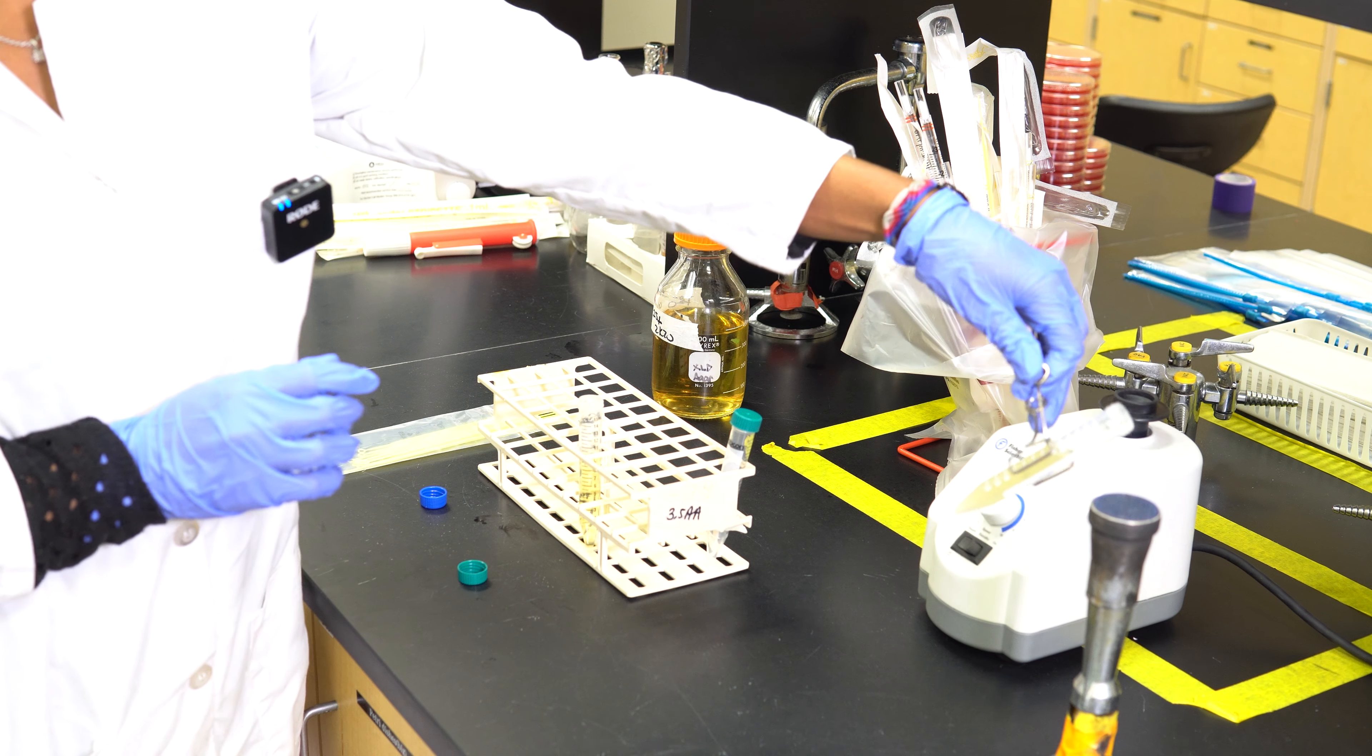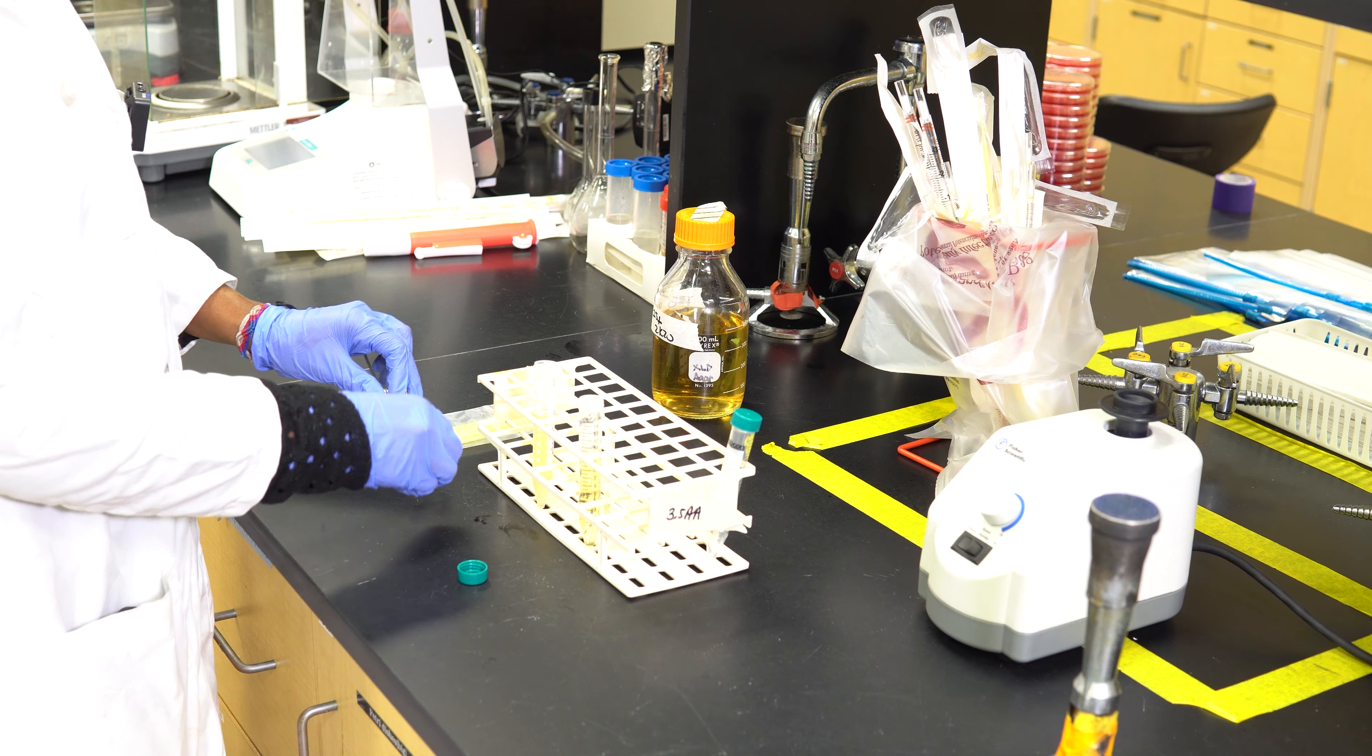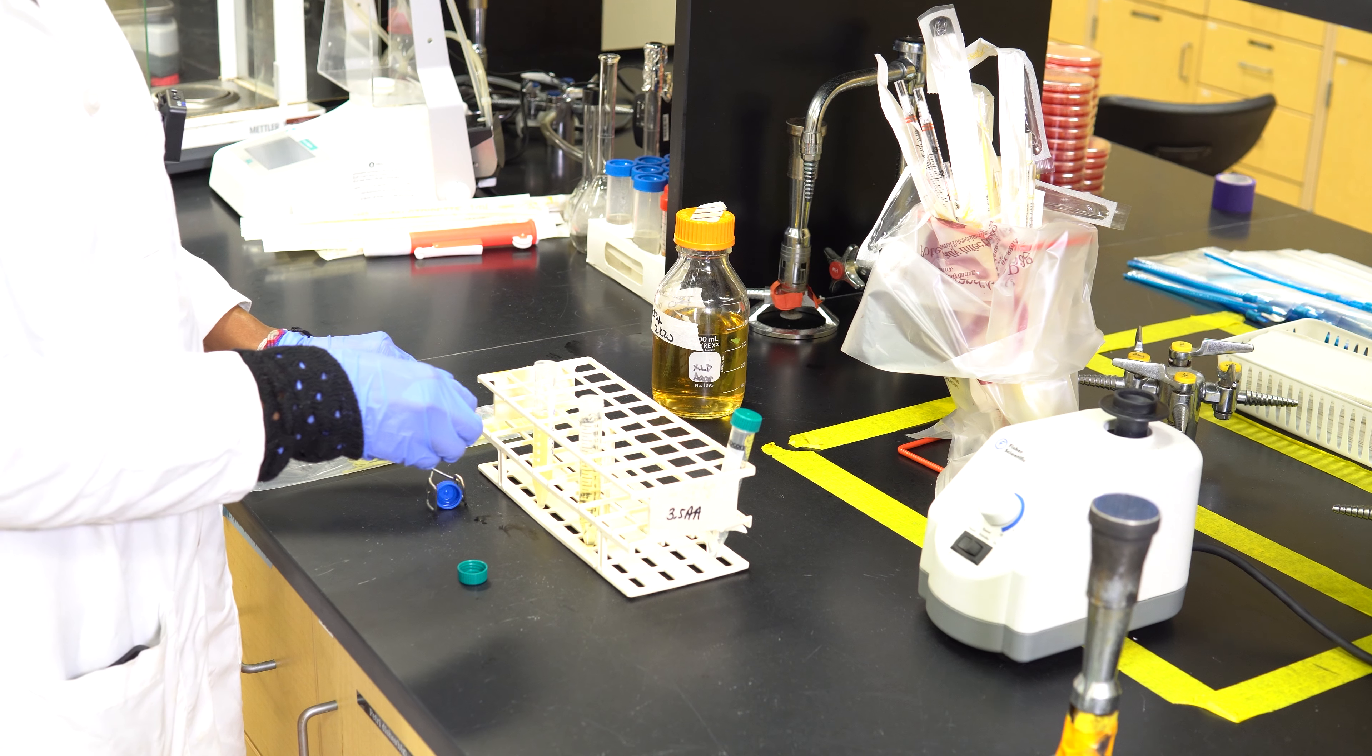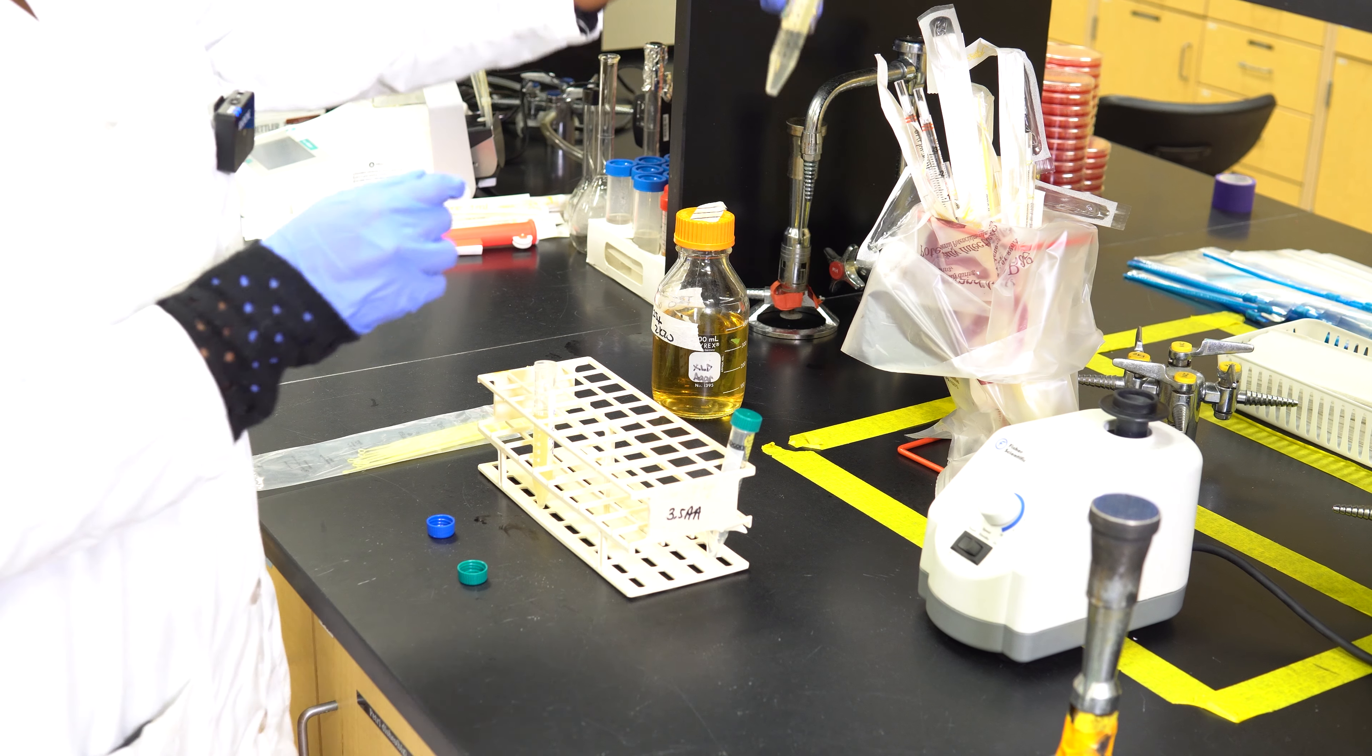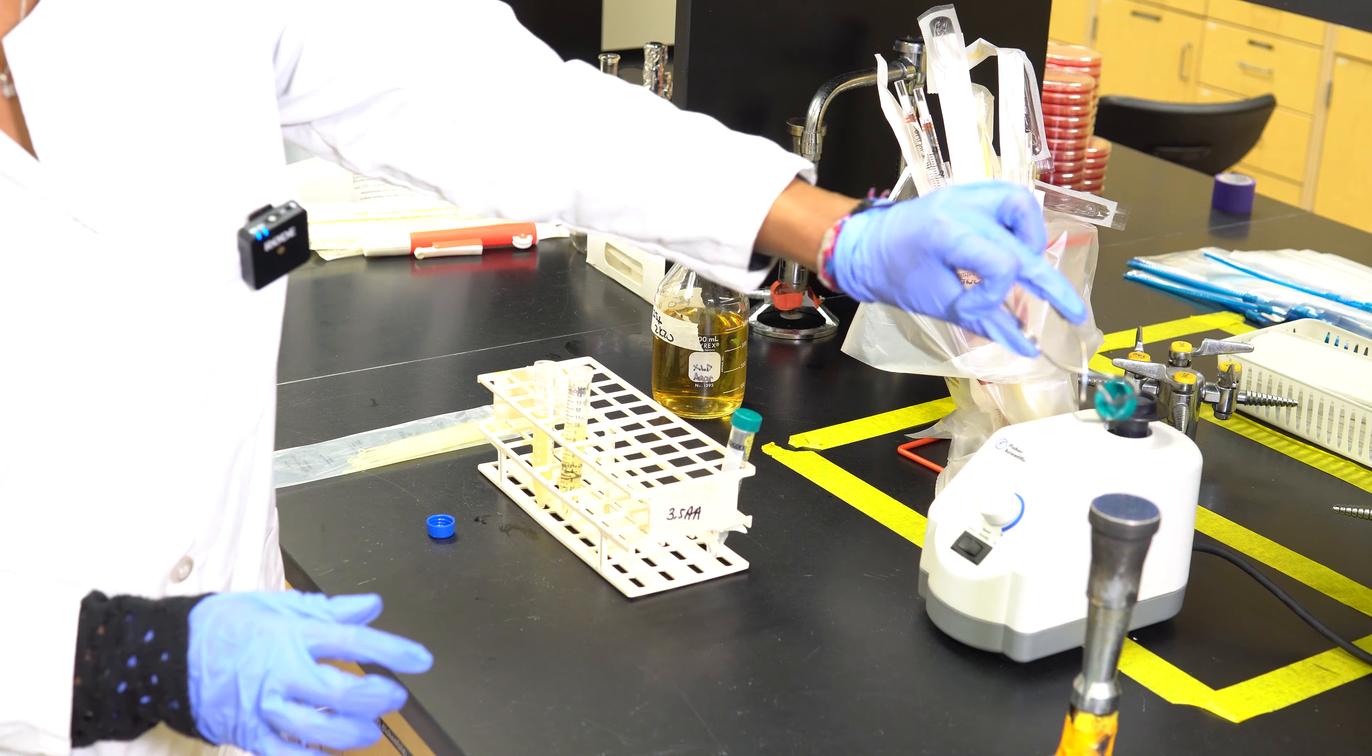The objective of this lab is to learn how to grow up cells for a microbiological study. The materials needed are the microorganism, test tube filled with fresh TSB, test tube rack, disposable loop, vortexer, and a Bunsen burner.